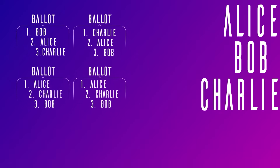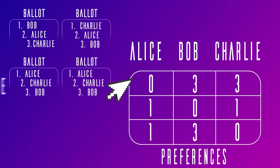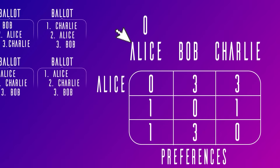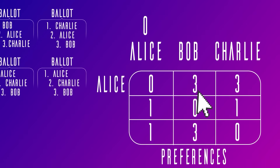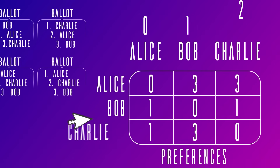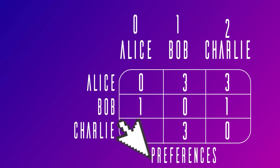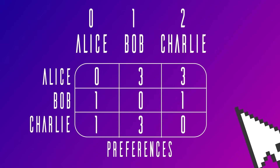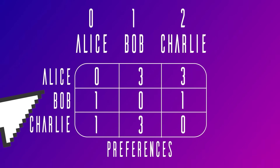Let's understand the preferences two-dimensional array. Suppose we have three candidates — Alice, Bob, and Charlie — and four voters. The first row represents preferences for Alice, candidate number zero. The first cell, also zero, means zero people think Alice is better than Alice. The next cell with three means three voters prefer Alice over Bob. The final cell means three voters prefer Alice over Charlie. The second row represents Bob and the last row Charlie. The preferences array captures all the data needed to determine pairs and their winners.